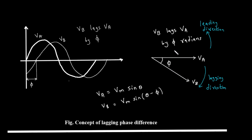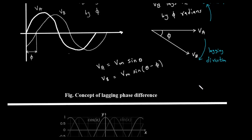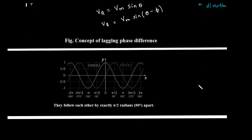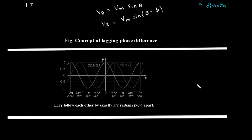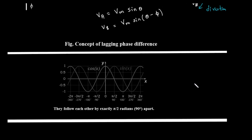So, leading is a positive phase angle, represented by a counterclockwise rotation on the phasor diagram. Lagging is a negative phase angle, represented by a clockwise rotation. Let's look at a few specific cases of phase difference. First, we see a graph of a cosine wave and a sine wave. The text says they follow each other by exactly pi over 2 radians, or 90 degrees, apart.